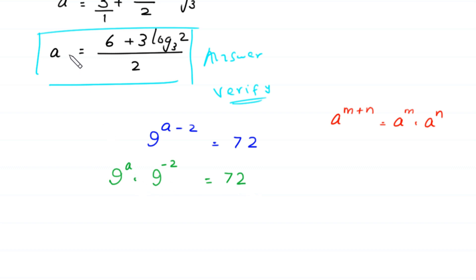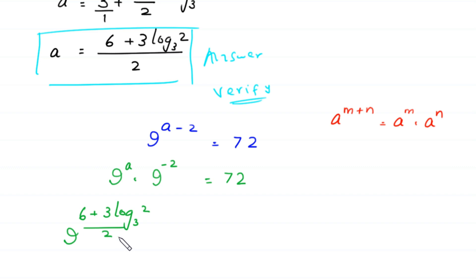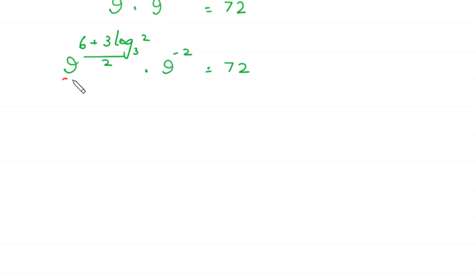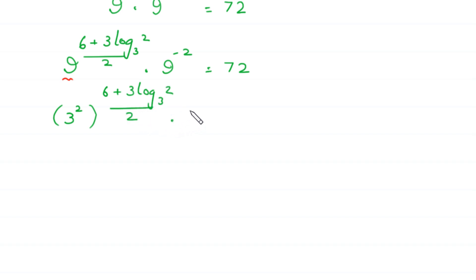Now, in place of a we put the value of a: 6 plus 3 times log base 3 of 2 divided by 2. So we have 9 to the power (6 plus 3 times log base 3 of 2 divided by 2) times 9 to the power negative 2 is equal to 72. Now, this 9 can be written as 3 squared, so we have 3 squared whole to the power (6 plus 3 times log base 3 of 2 divided by 2) times 3 squared to the power negative 2 is equal to 72.